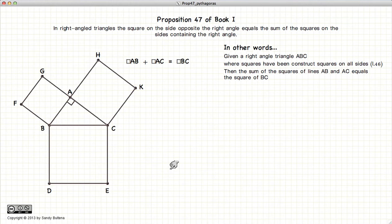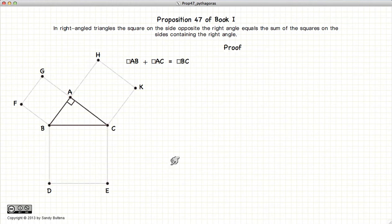Now there's many different ways of demonstrating Pythagoras' Theorem, but we're going to stick with what Euclid did. So the first thing we need to demonstrate is that B, H, and C, G are indeed straight lines.